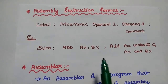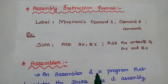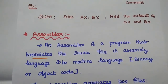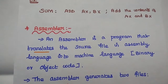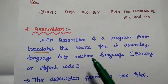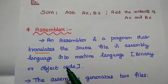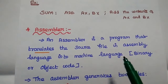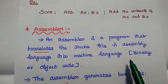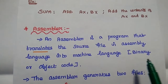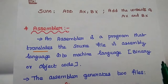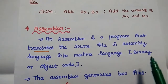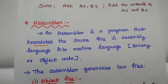This is the general format of an assembly language program. We are going to give this assembly language program to the assembler — that is the first step. An assembler is a program that translates the source file in assembly language into machine language. Machine language is the language understandable by the machine, expressed in terms of binary code or object code.